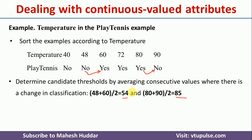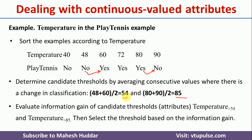Now, when you have more than one threshold value, the question is: should I select 54 as the boundary or 85 as the boundary? What we do in this case is calculate the information gain of every threshold value — 54 and 85 — and the one with the maximum information gain will be selected as the threshold.